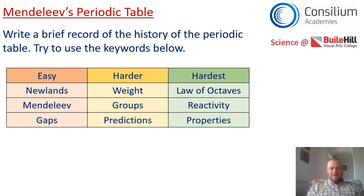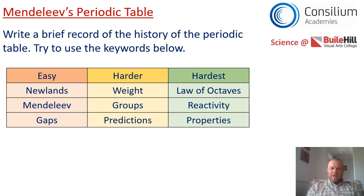What we'd like you to do is produce a piece of writing for us. That piece of writing, if done really well, could include the nine words shown below. You may not be able to use all nine words, and I don't want you to worry about that — use as many of those words as you can. Produce the piece of writing, and then email it to your science teacher.